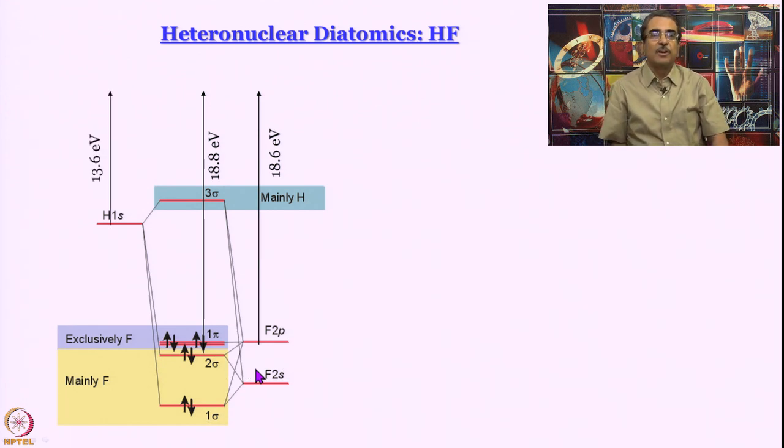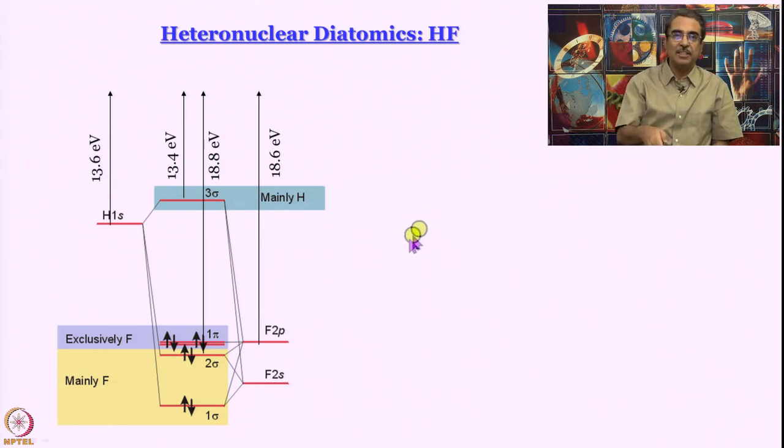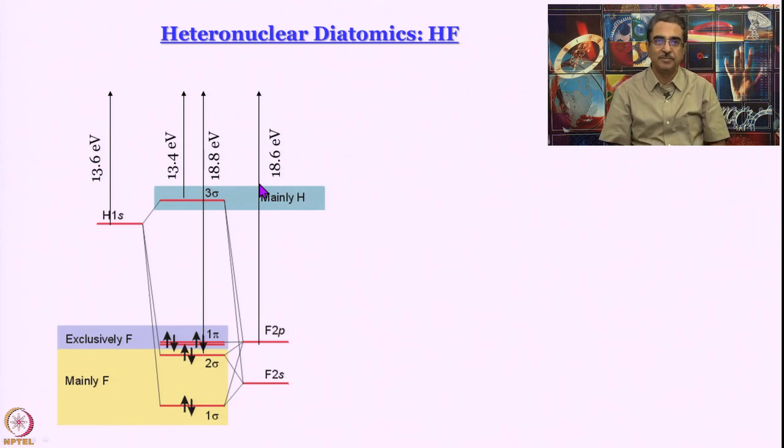Whereas for 1s orbital of hydrogen atom, I hope you have not forgotten that the ionization energy is 13.6 electron volt, we get another ionization energy for HF at 13.4 electron volt, very close values. That is how this energy diagram of the molecular orbitals has been constructed.